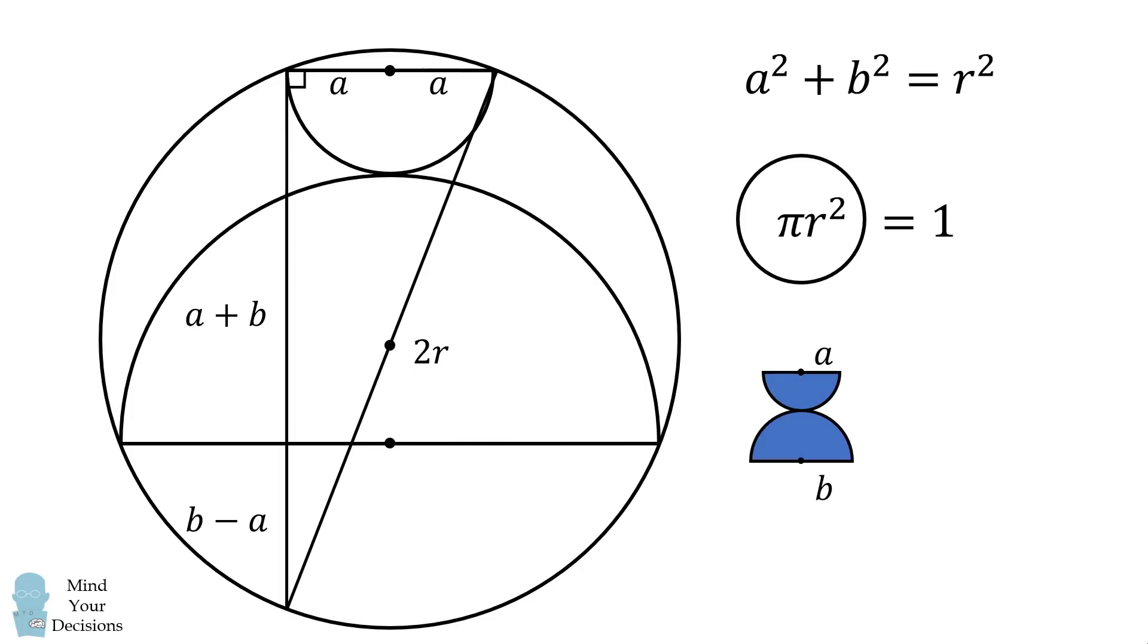We can calculate the combined area of the two semicircles. It will be equal to 1 half pi multiplied by a squared plus 1 half multiplied by pi multiplied by b squared. We can simplify this and substitute that a squared plus b squared is equal to r squared.